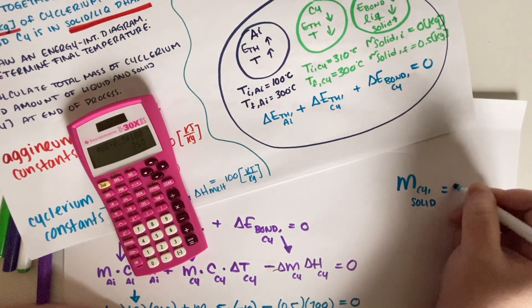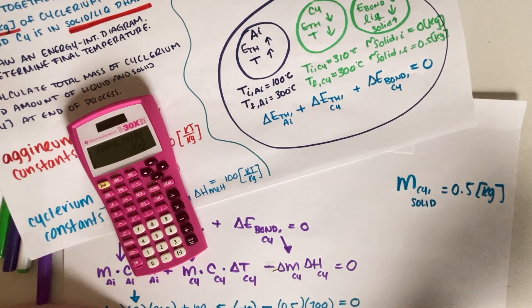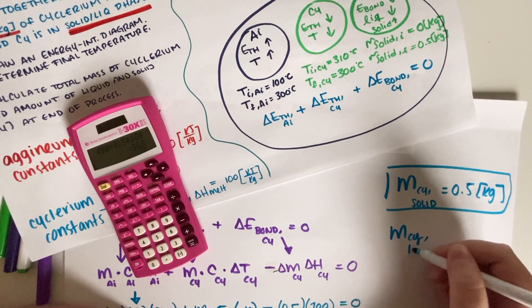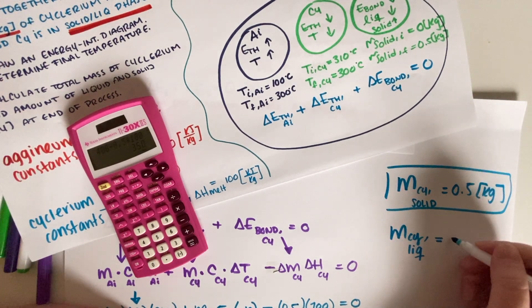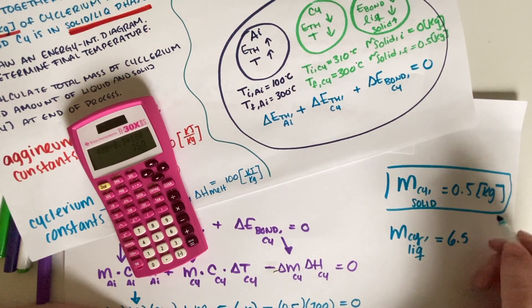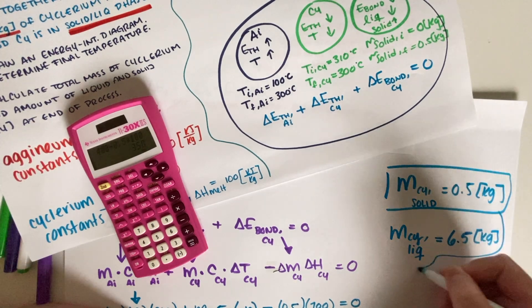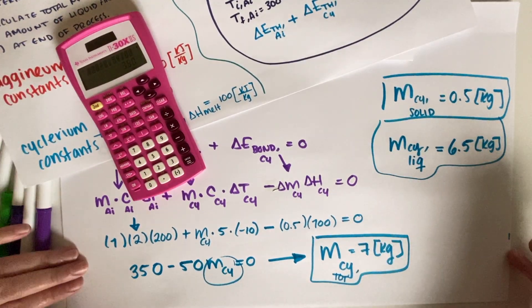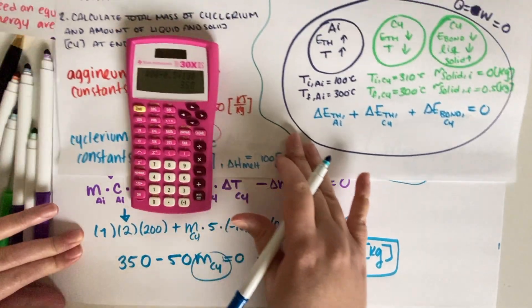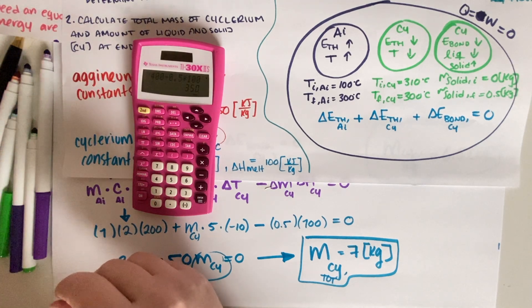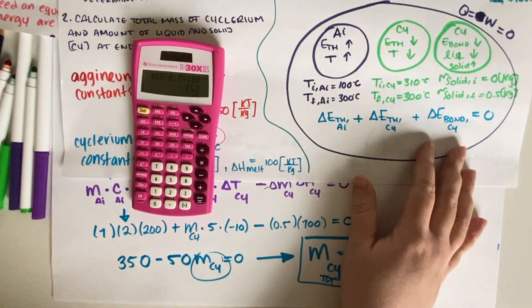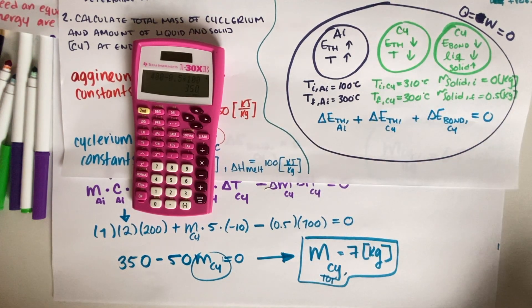The total mass of cyclerium is 7 kilograms. Of that, 0.5 kg is frozen solid as given. Therefore the remaining liquid mass is 7 − 0.5 = 6.5 kilograms. That's our final answer. I hope you found this useful — it's good practice for a final exam or midterm. Leave a like if it helped, post questions in the comments, and I'll see you in the next video.